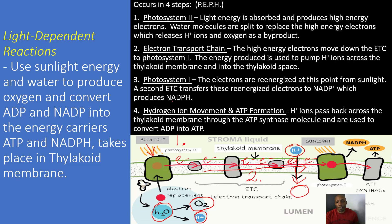Step three is Photosystem I. The electrons are re-energized at this point from sunlight. Then a second electron transport chain transfers these re-energized electrons to NADP+, which produces NADPH. So that second electron transport chain converts the NADP+ into NADPH.